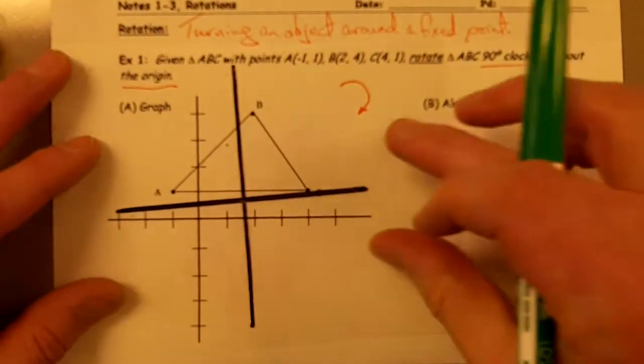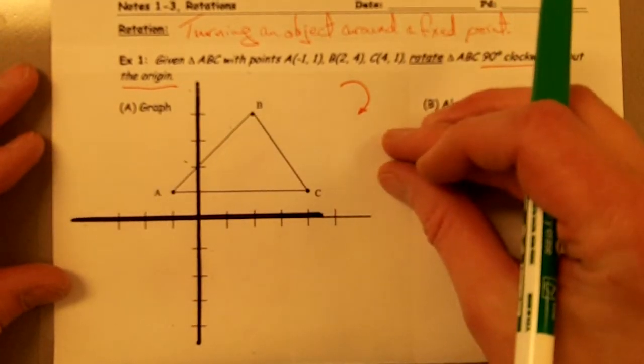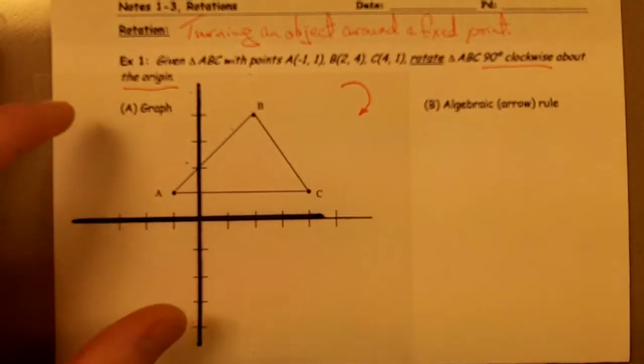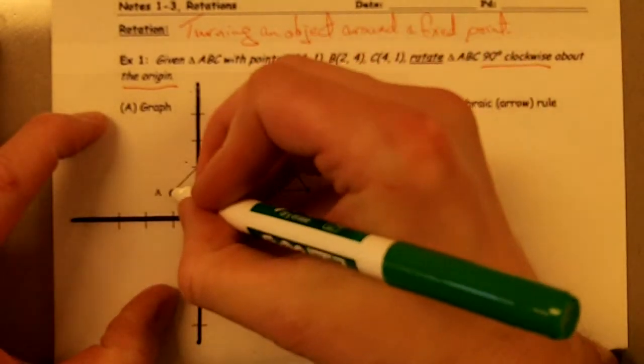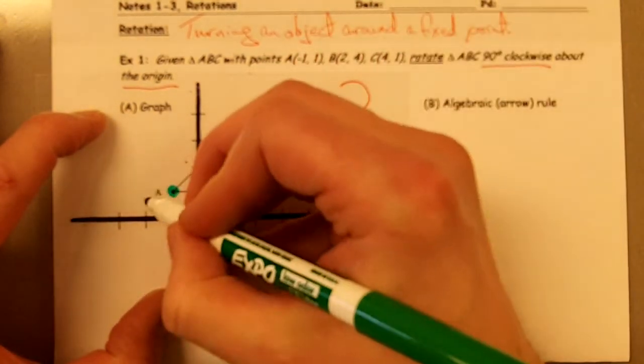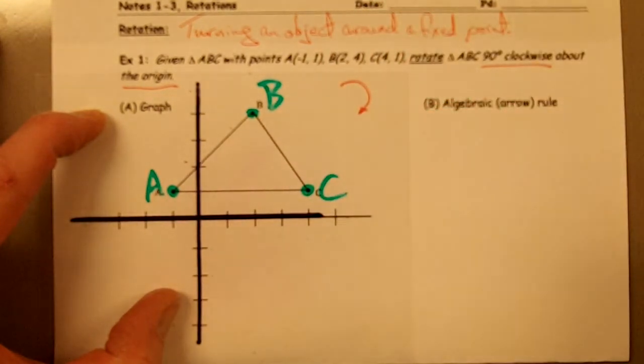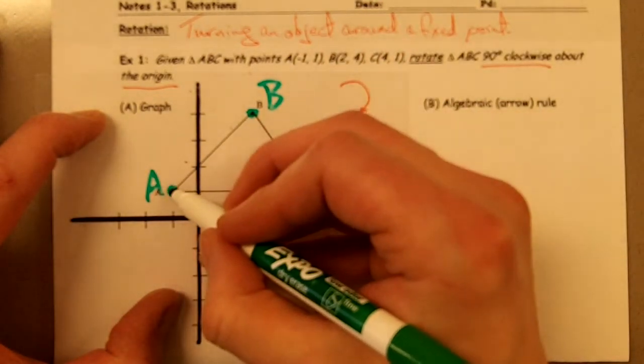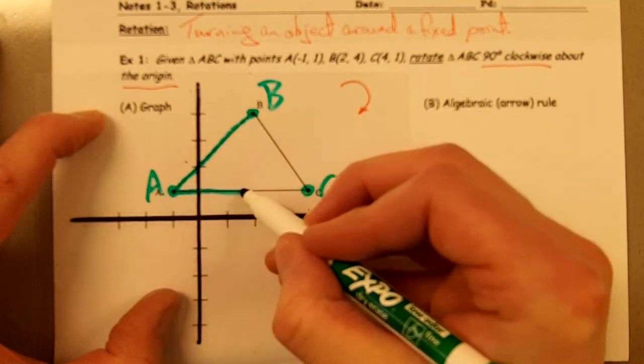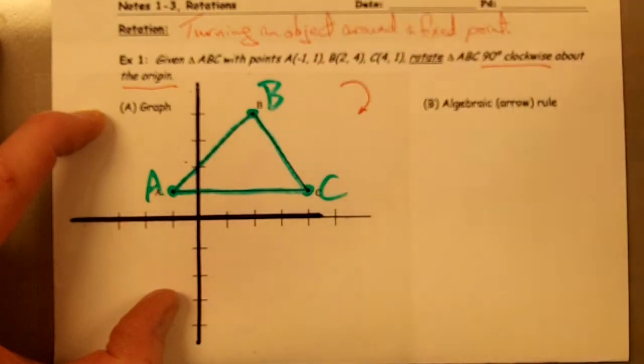And what I'm going to do is lay my transparency on top of my graph here. I'm going to line up my X and Y axes, and I'm going to take a marker, and I'm going to put point A, point B, and point C on my transparency. And then I'm going to connect up my points A, B, and C, so I can draw my triangle. I'm essentially just drawing my triangle on top of my transparency.